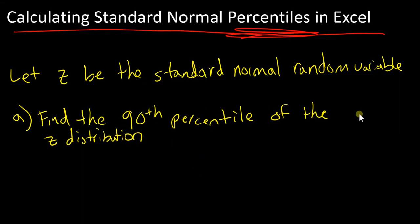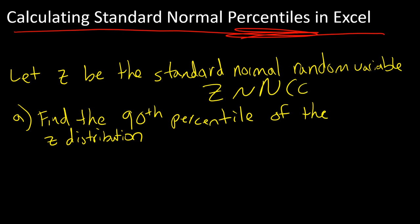So let's talk about how to do it. Let z be the standard normal random variable. Remember that just means z is distributed with mean 0 and standard deviation 1. That's what standard normal means.